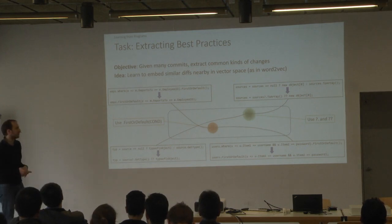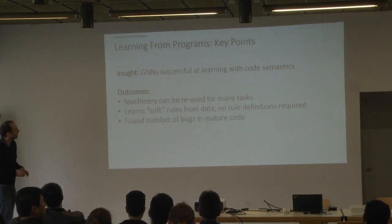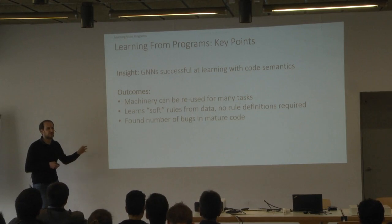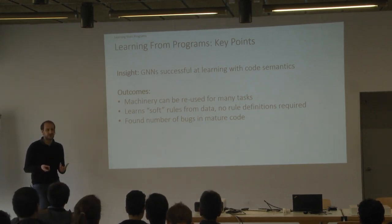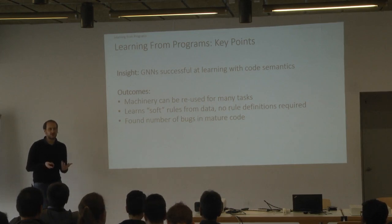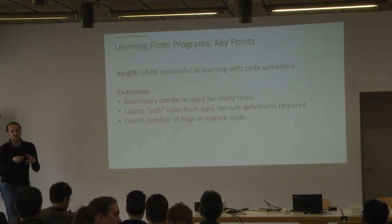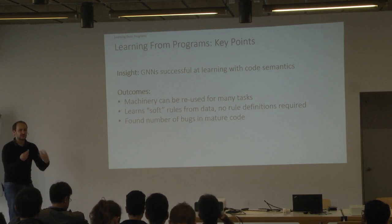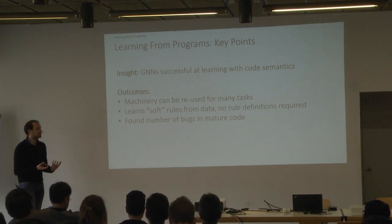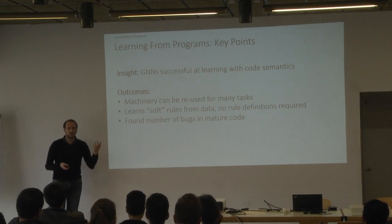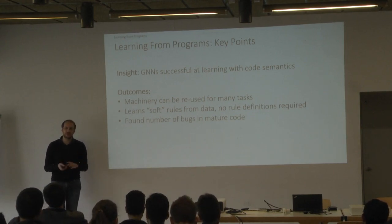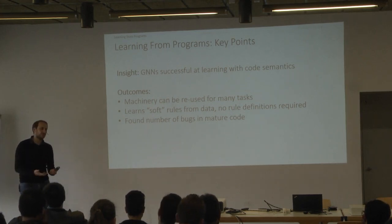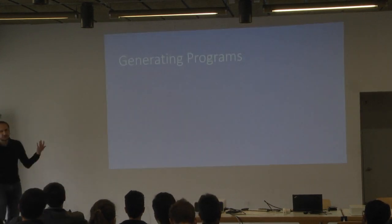The interesting thing is to do this on project-specific data — you have a small project, new people come in, they always make the same mistake, and you can find the thing you always teach them in their first week and suddenly turn it into a linter rule so it doesn't have to go through code review anymore. The key points really are: graph neural networks are a super successful way of learning from structured data. You can reuse this machinery all the time, and you learn soft rules — not quite a linter rule — but best practices extracted from data. We found a number of bugs in mature code, including null pointer exceptions in weird paths in Roslyn that are never actually executed, but where the code was obviously wrong.